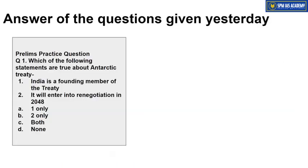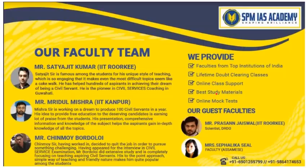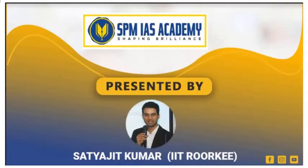Now let's review yesterday's practice questions. On the Antarctic Treaty: Statement 1 — 'India is a founding member' — is wrong; the treaty came in 1961 and India joined in 1983. Statement 2 — 'It will enter renegotiation in 2048' — is also wrong; it will enter renegotiation in 2041. So the correct answer is Option D. On the Hoolock Gibbon question: there are three species, not two, and both Eastern and Western Hoolock Gibbons are found in Assam — not just the Eastern one. So the correct answer is also Option D. That's all from our side for today — thanks for watching.